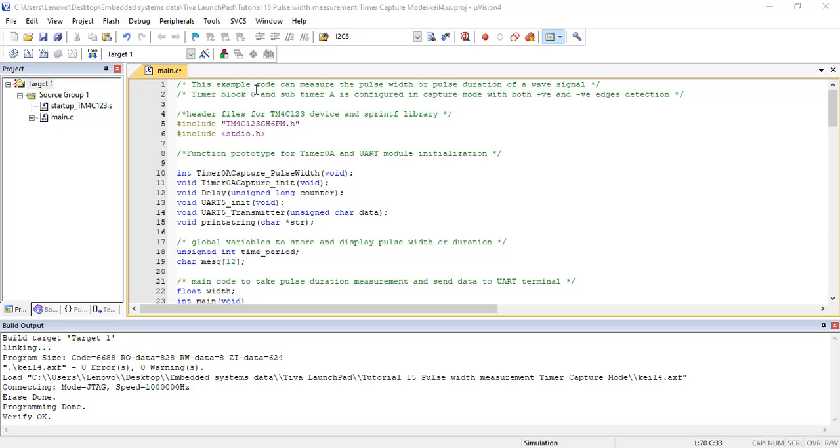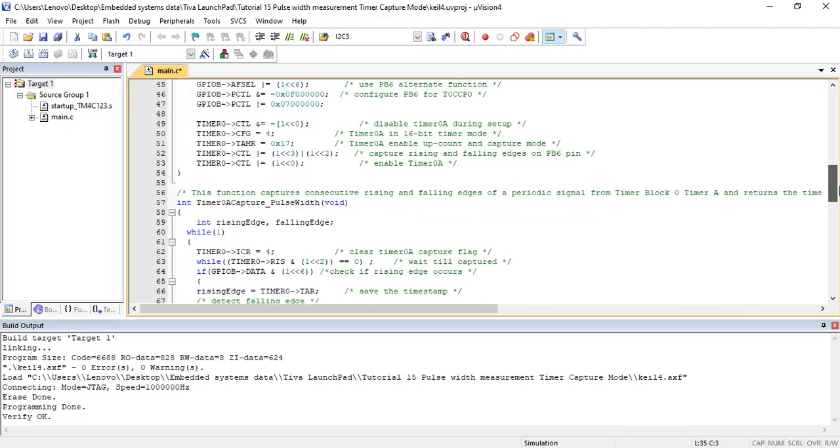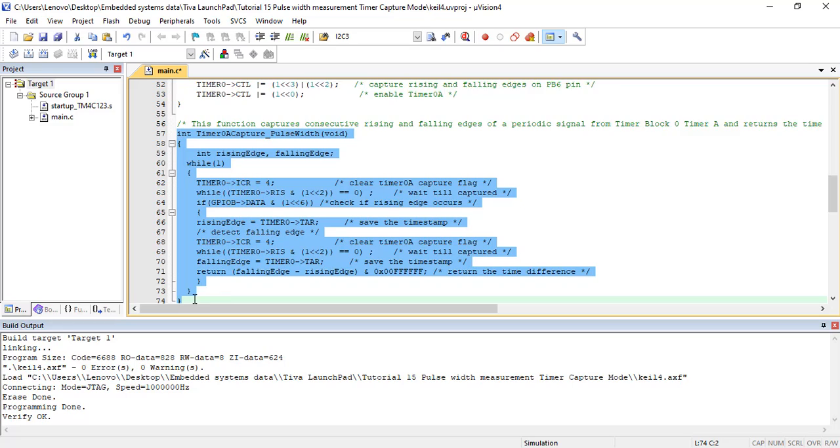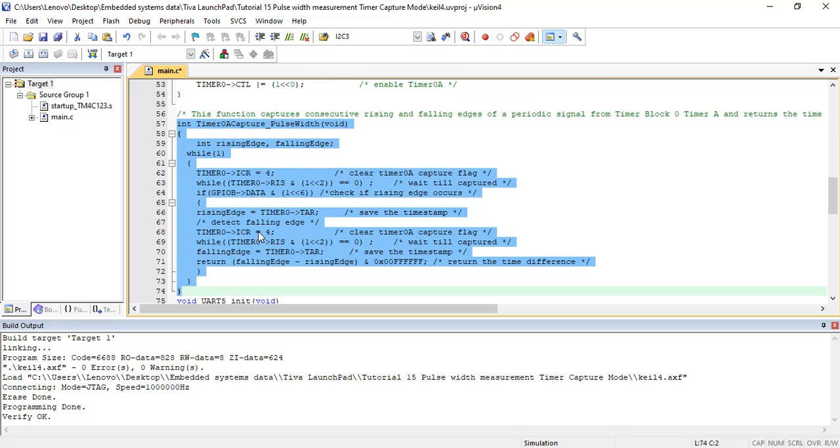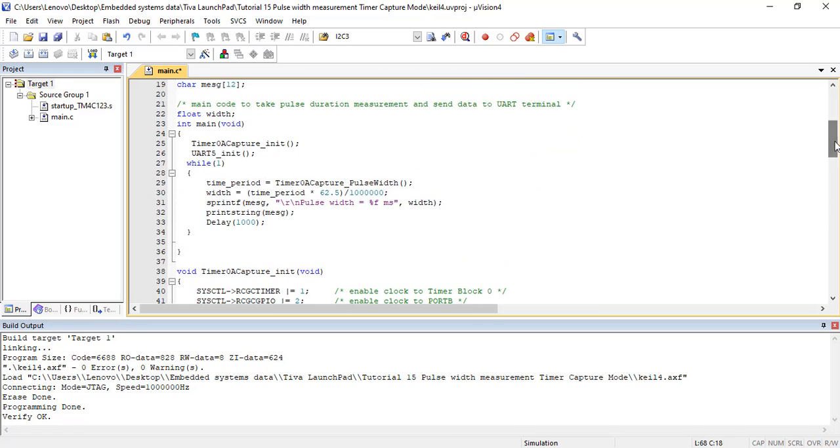Now let's see the demo code to measure pulse duration. This example code of Tiva-C microcontroller measures the pulse duration of digital signal given to PB6 pin of Tiva-C launchpad.